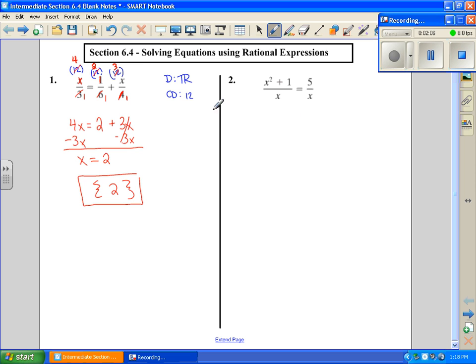Alright, so number 2. First thing we want to do is check our domain, which means if there's a variable in the denominator, we have to set our denominator not equal to 0. So this is x is not equal to 0. This will be a repeat. So all I need to know is that my solution can come out to be any number except for 0. x cannot equal 0.